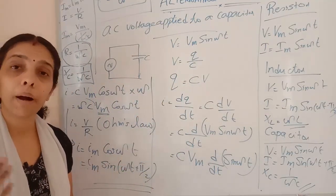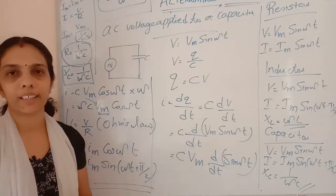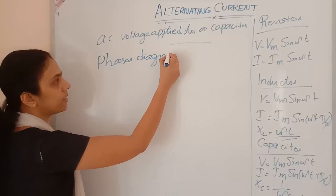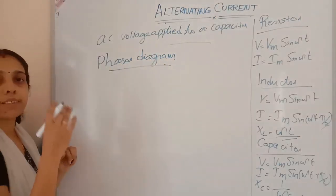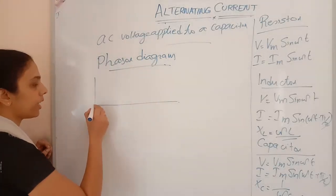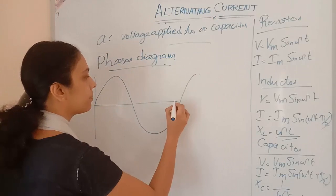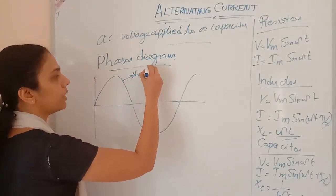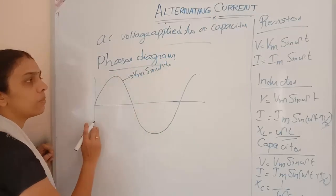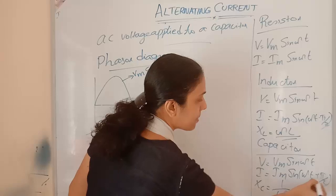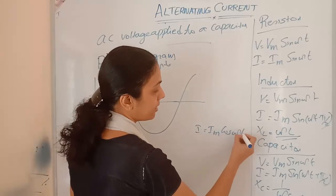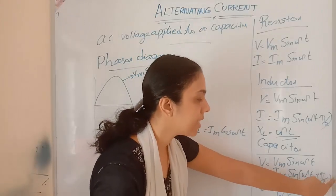Now we will find the power dissipated and draw the phasor diagram. For the waveform: voltage is V equals Vm sin(ωt) with maximum value Vm. Current is I equals Im sin(ωt + π/2), which equals Im cos(ωt). So the current waveform reaches its peak π/2 earlier than the voltage waveform.